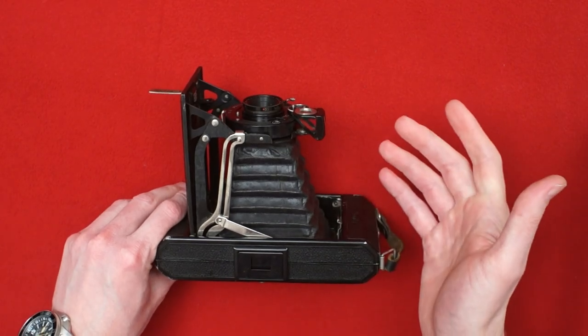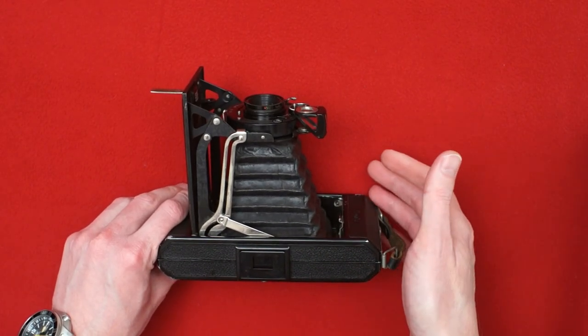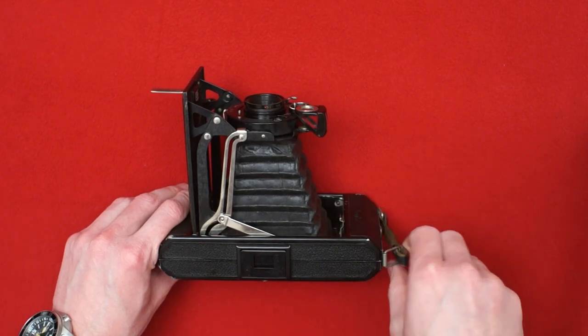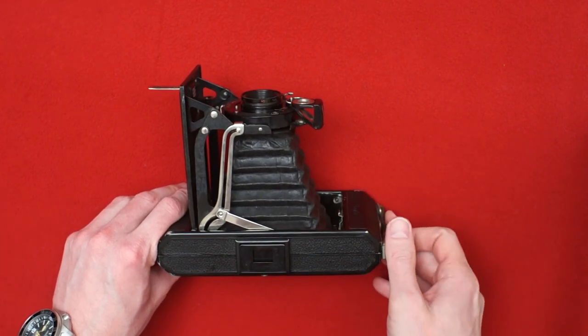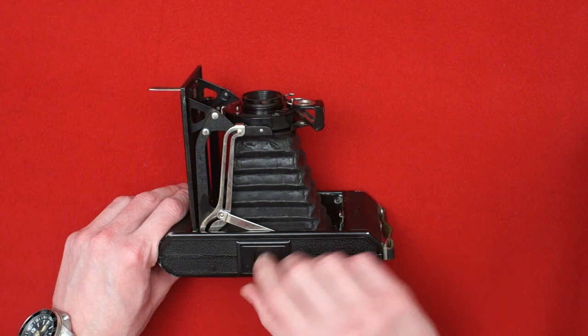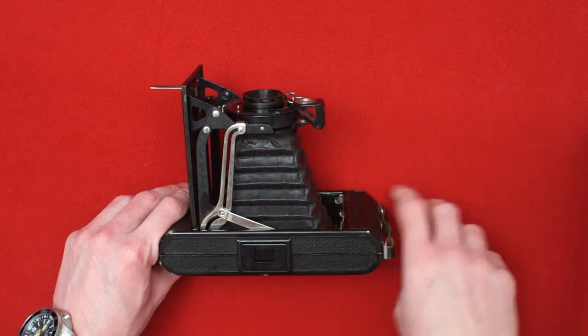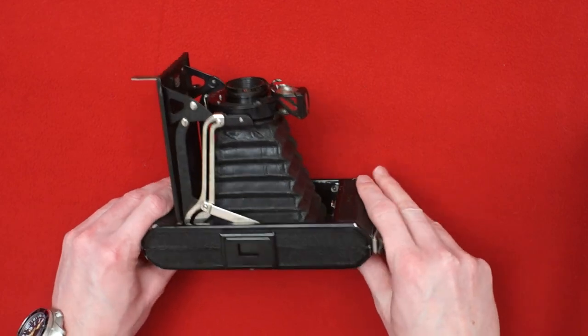Also by 1960s basically all medium format consumer cameras, consumer grade cameras were no longer popular. They went out of production. Probably because 35 millimeter cameras, they were getting better and better all the time. 35 millimeter film was getting better.